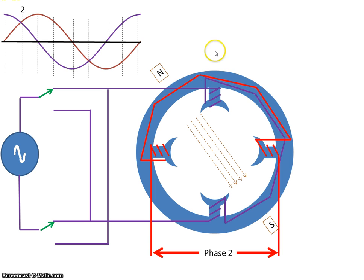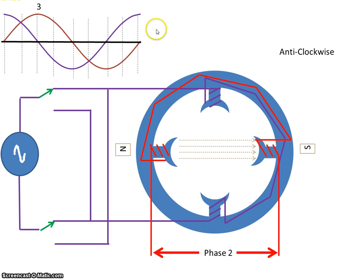So the north pole has moved from here in time one, down here in time two, and at time three, current through this winding here is zero, and current through this winding is at a maximum. So the north pole has moved from there to there to there.